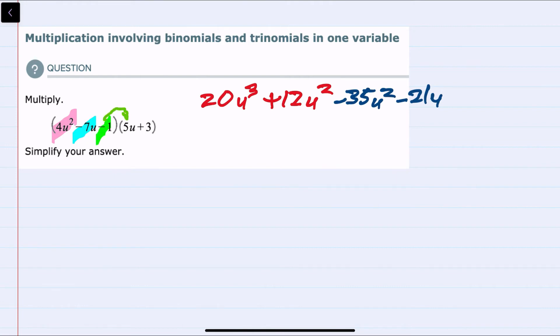We'll then move to the third term, multiplying by the first part of the binomial. Minus 1 times 5u is minus 5u, and minus 1 times 3 gives us minus 3. So our color coding here just keeps track of the fact that we multiplied every term in the binomial by each one of those three terms in the trinomial.